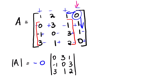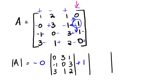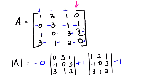The second element in the last column is positive 1. It affects its column and row, leaving the remaining 3x3 matrix: 1, 2, 1, negative 1, 0, 3, 3, 1, 2. The next element is negative 1, with remaining 3x3 matrix: 1, 2, 1, 0, 3, 1, 3, 1, 2.